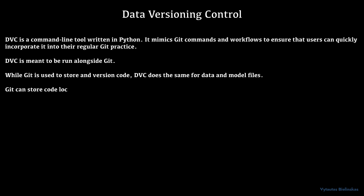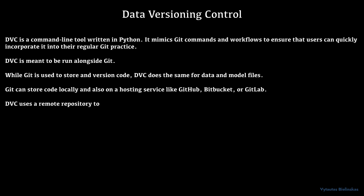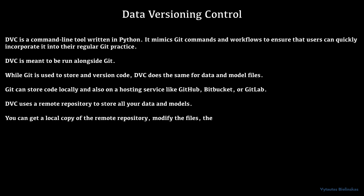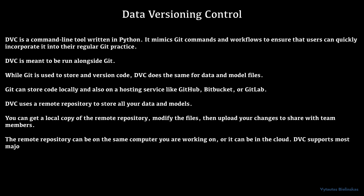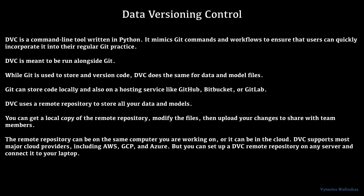Git can store code locally and also on a hosting service like GitHub, Bitbucket, or GitLab. DVC uses a remote repository to store all your data and models. You can get a local copy of the remote repository, modify the files, then upload your changes to share with team members. The remote repository can be on the same computer you are working on or in the cloud. DVC supports most major cloud providers including AWS, GCP, and Azure, but you can set up a DVC remote repository on any server and connect it to your laptop.